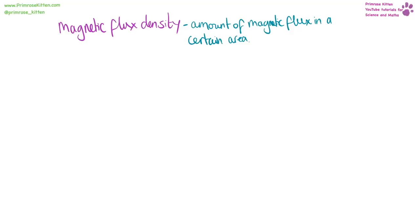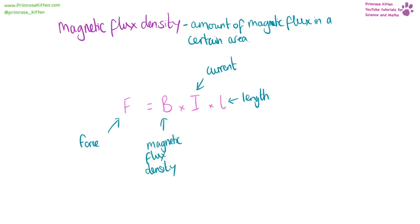Magnetic flux density is the amount of magnetic flux in a certain area. The equation is: force equals magnetic flux density times current times length — F = BIL. Note: uppercase I for current, lowercase l for length. Units: force in newtons, magnetic flux density in tesla, current in amps, and length in meters.